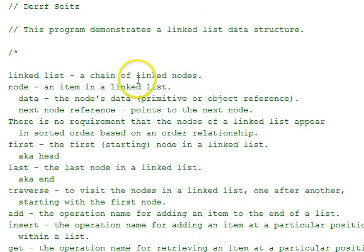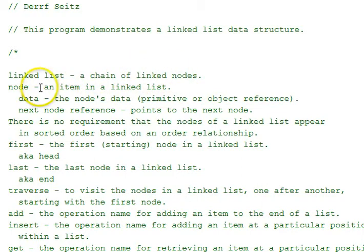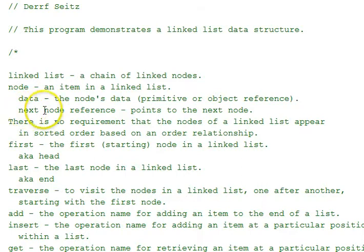A linked list is a chain of linked nodes. A node consists of two parts: it contains the data, whatever type it is, and a next node reference pointing to the next node that's chained in the list.